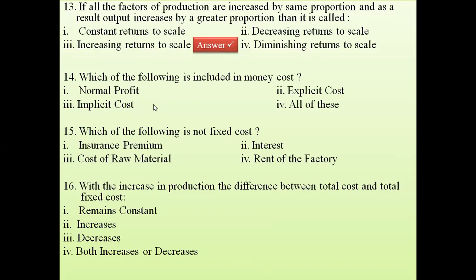Question 14: which of the following is included in money cost — normal profit, explicit cost, implicit cost, or all of these? The answer is all of these, because money cost includes implicit cost, explicit cost, and normal profit as well. This has already been discussed in the cost chapters.